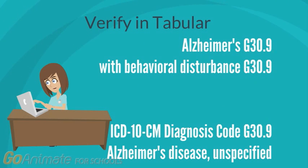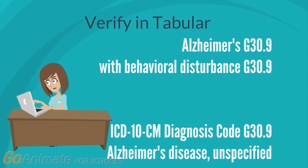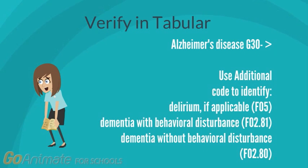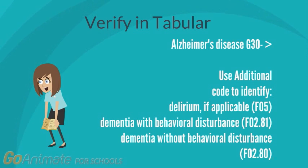With the example of Alzheimer's, we would flip to G30.9 in the tabular section, the middle section of the book. Once we find G30.9, we would look around the code to see if there are any instructional notations that we need to follow. Let's look at an example — if we open to G30.9, our Alzheimer's disease code, we'll see notes that say to use an additional code to identify another condition if it exists.